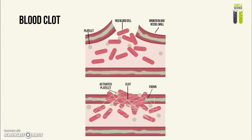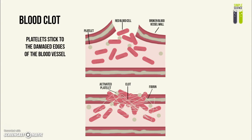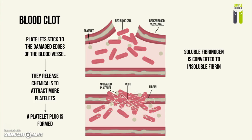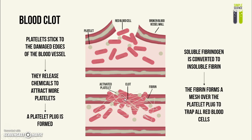Now we're on to blood clotting. This is a damaged vessel with red blood cells trying to escape it. When a blood clot forms, platelets stick to the cut edges of the blood vessel and release chemicals to attract even more platelets, forming a platelet plug. Then soluble fibrinogen is converted into insoluble fibrin, which sticks to the platelet plug to form a mesh over it.